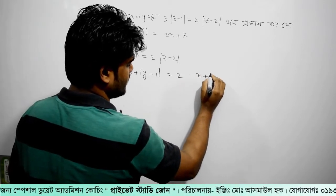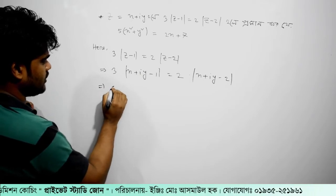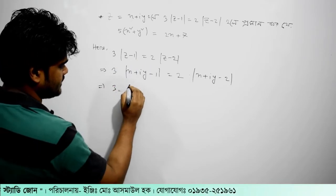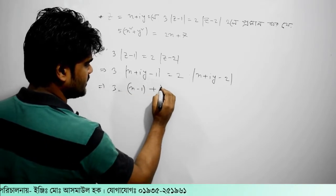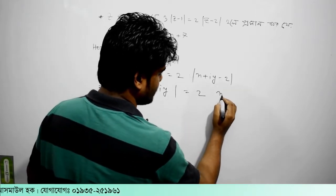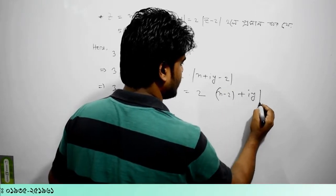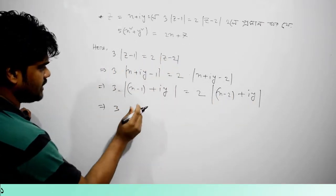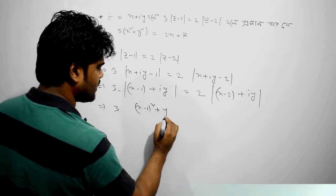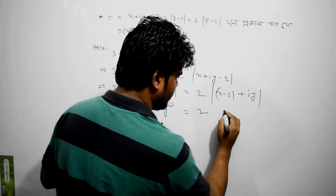z equals x plus iy. x plus iy minus 2. Now we will have a format of x plus iy. So x minus 1, we will have x minus 2. Now we will have the modulus, which is whole square plus whole square root equal to 2.